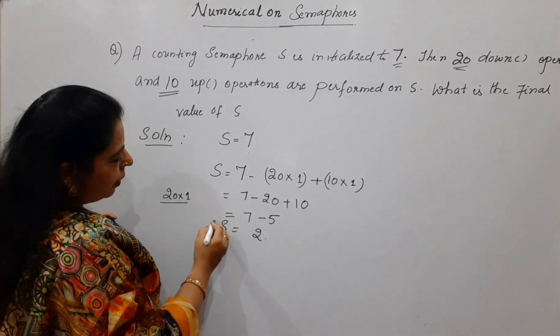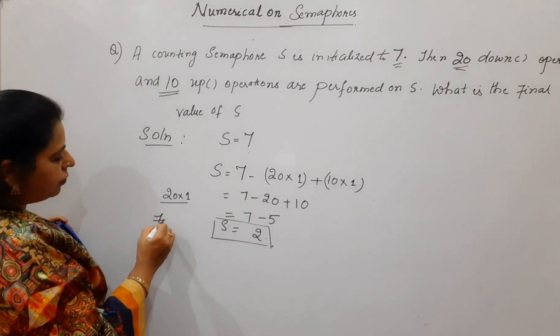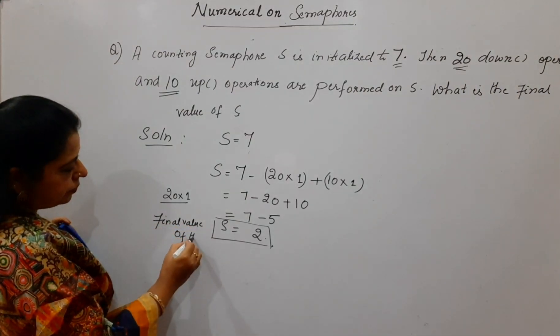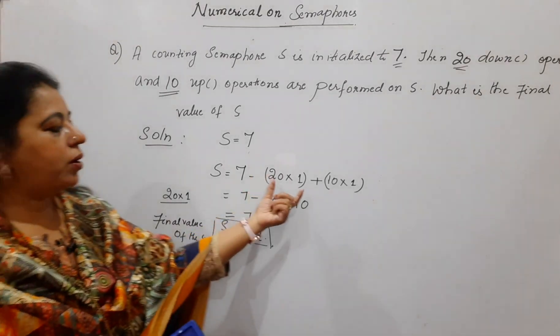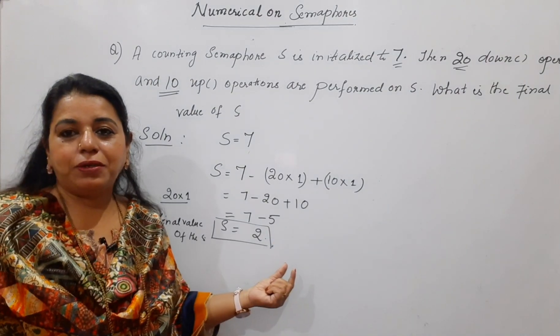So, your semaphore value is how much? Negative 3. This is your final value of the semaphore in this case. Very simple because you are having a bigger value for the down and up you use this technique in order to arrive at the solution.